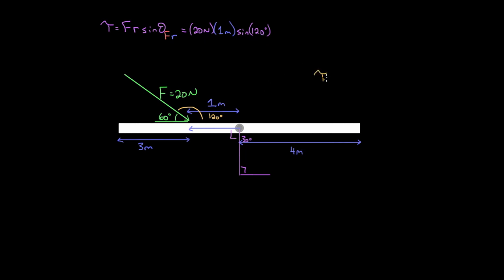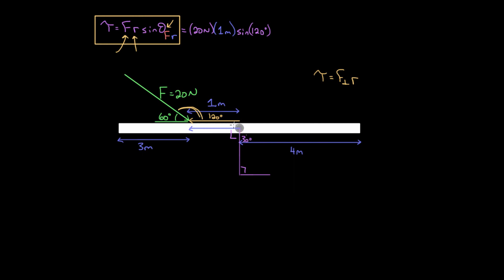Recapping: you can find torque from a force by taking the perpendicular component of that force and multiplying by the magnitude of the R vector, where R points from the axis to the point where the force is applied, and perpendicular means perpendicular to R. Or use the formula torque equals F times R times sine theta, where F is the entire magnitude of the force, R is the magnitude of the R vector, and theta is the angle between F and R — whether head to head, tail to tail, or the supplementary angle, since sine of supplementary angles are equal.